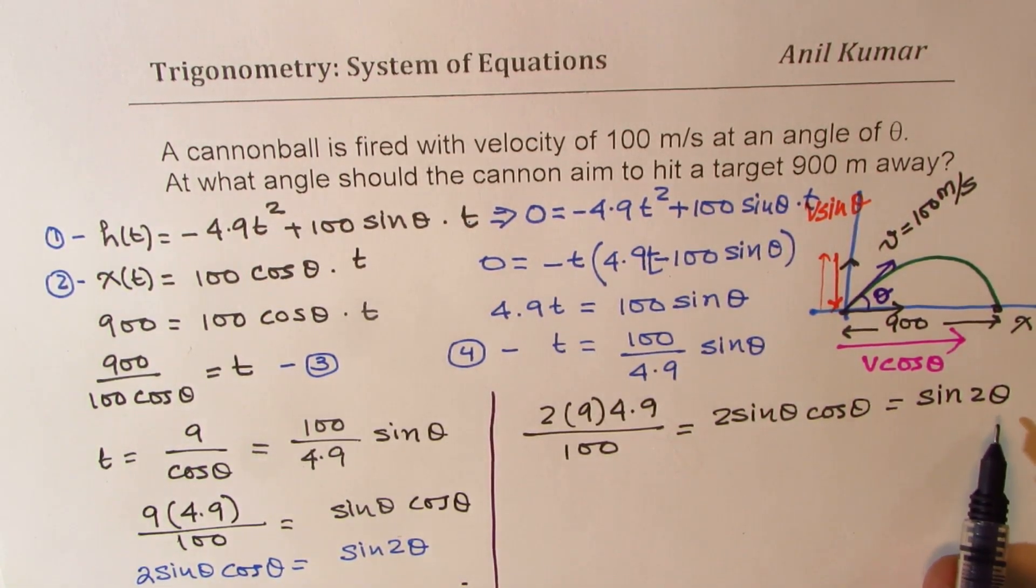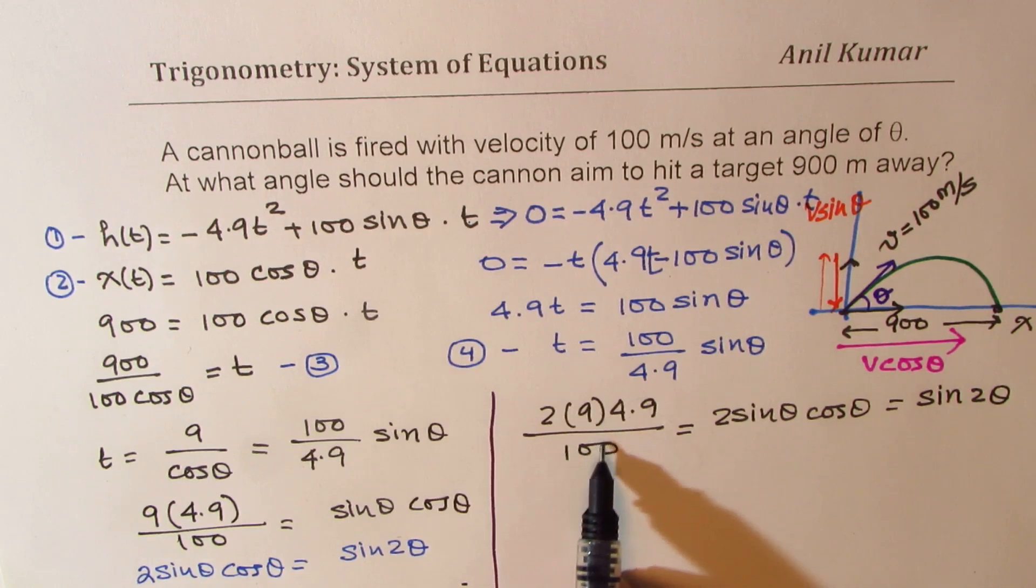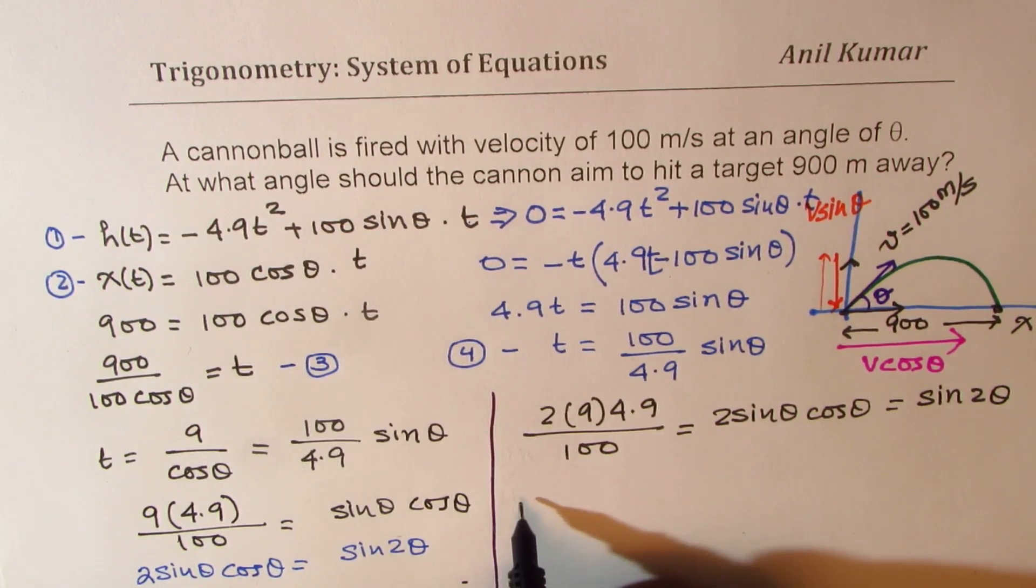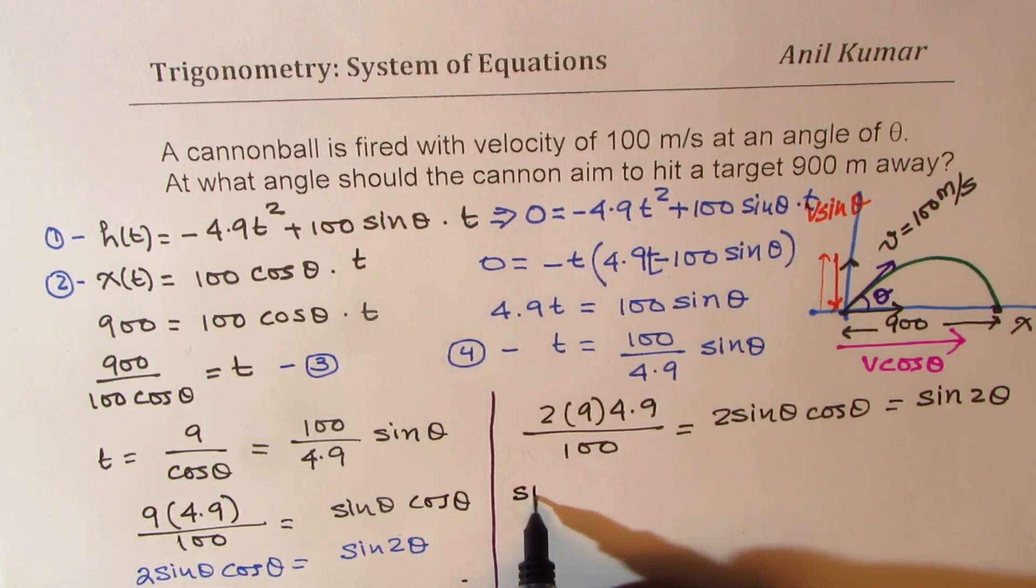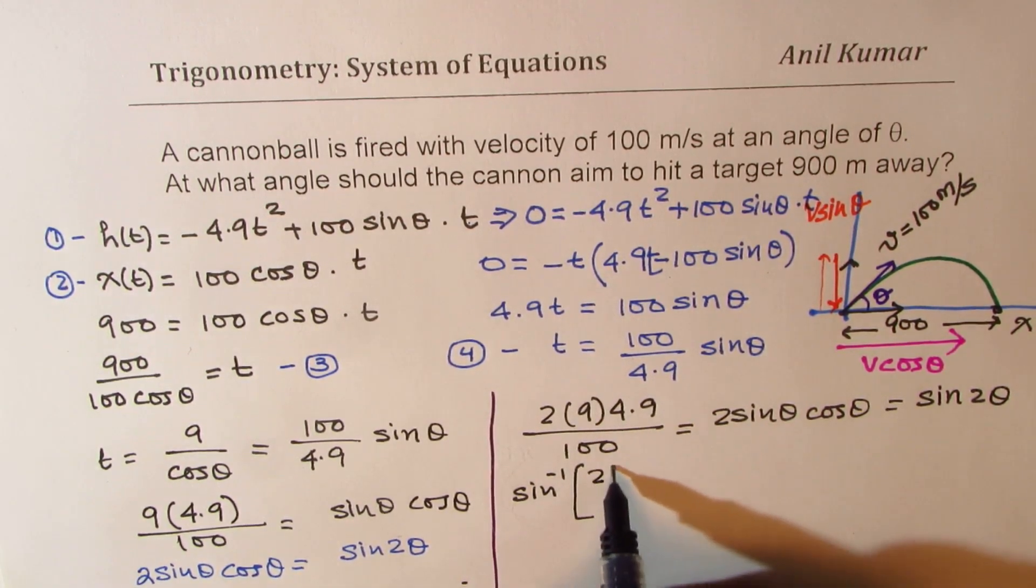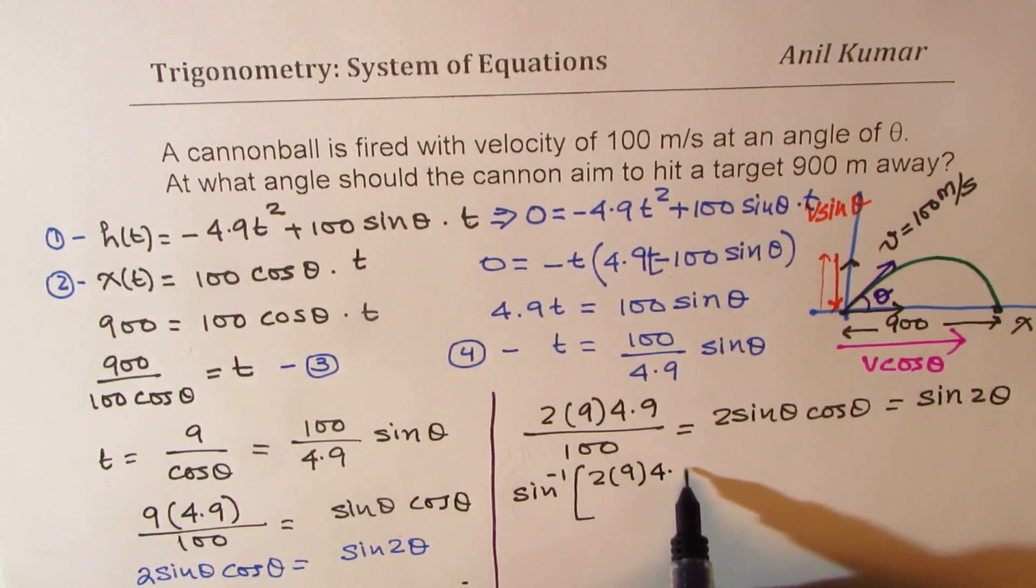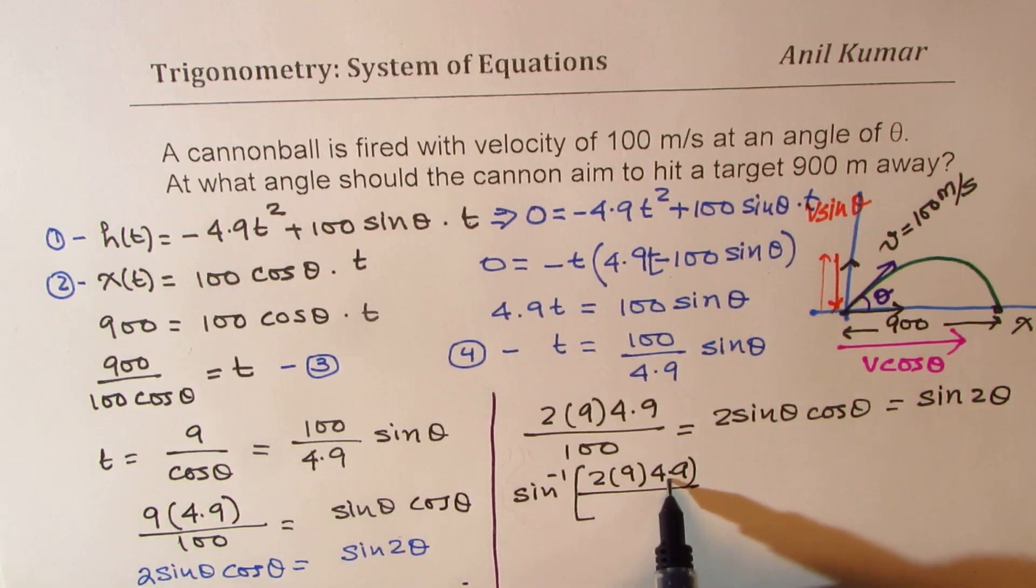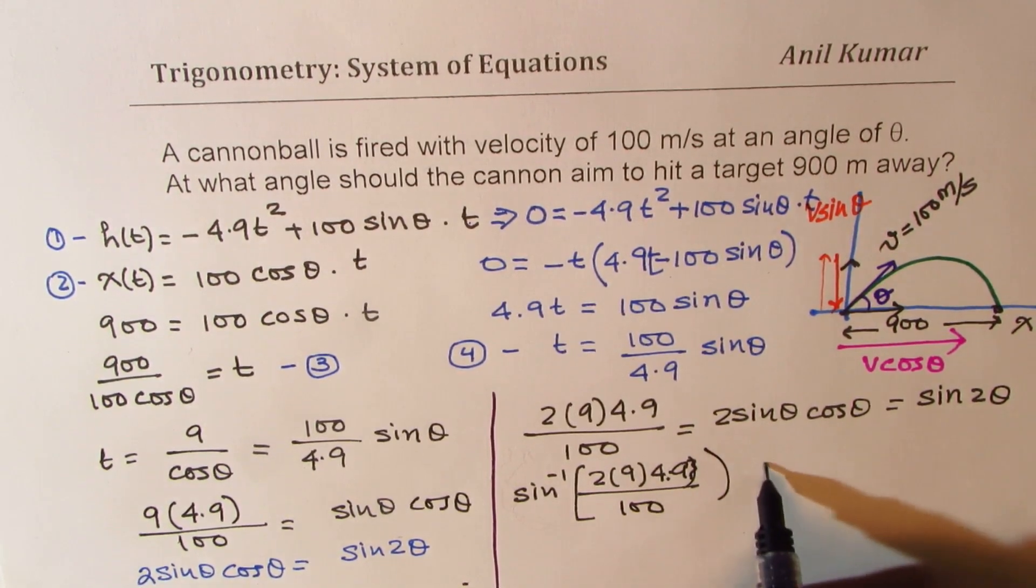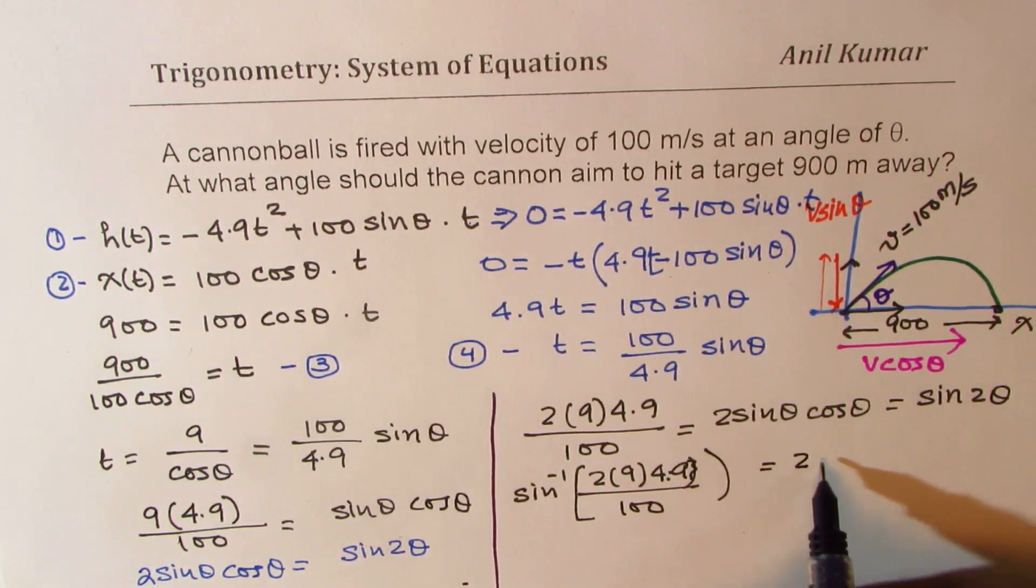Now, we can find what 2 theta is taking sin inverse on both the sides, right? So that is how we are going to find the solution. So we can write here as sin of sin inverse of 2 times 9 times, I am just keeping these values as such, over, this is 4.9 over 100, right, is equal to 2 times theta.